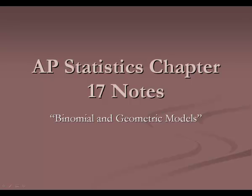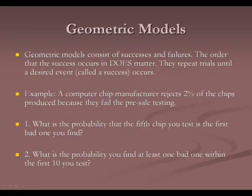Chapter 17 is about binomial and geometric models. Geometric models are something we've already covered, back in chapter 14 — you just didn't know they were called geometric models. A geometric model is when you have successes and failures, and the order in which the success occurs does matter. You often repeat trials until you get your success.